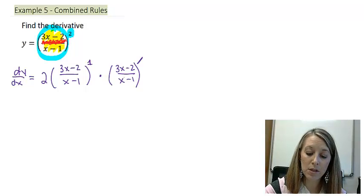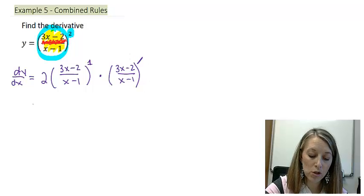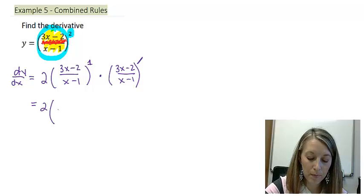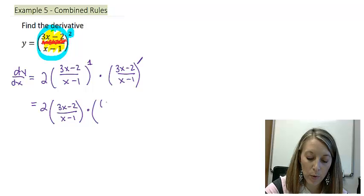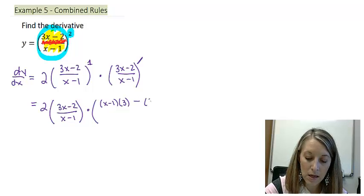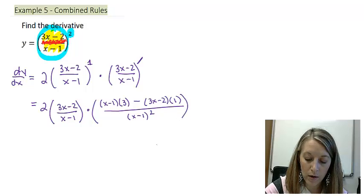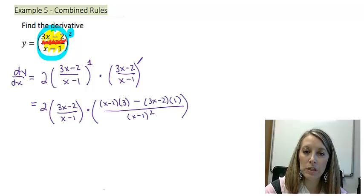Then I need to take it times the derivative of the inside, and now here is where I am going to use my quotient rule. My quotient rule says the original of the bottom times the derivative of the top, minus the original of the top times the derivative of the bottom, all over the original of the bottom squared. Now I have officially taken the derivative using both of my larger rules — a chain rule and a quotient rule.